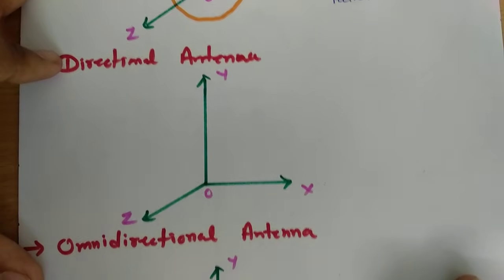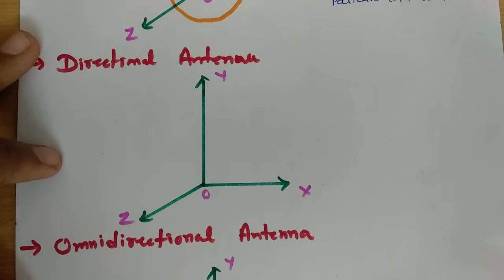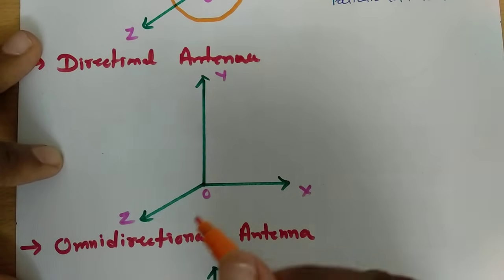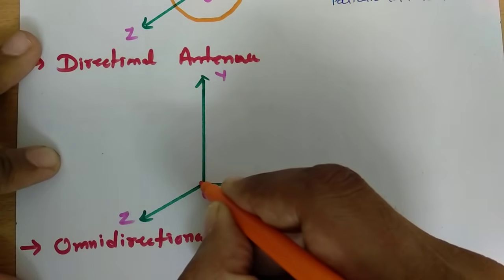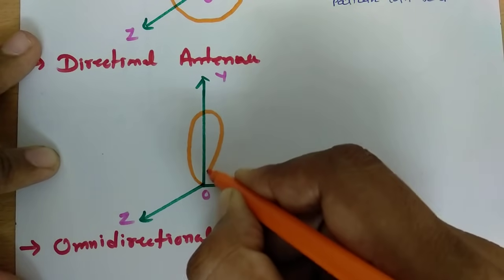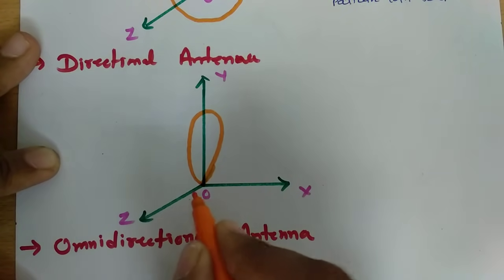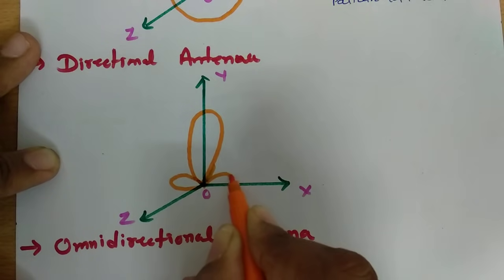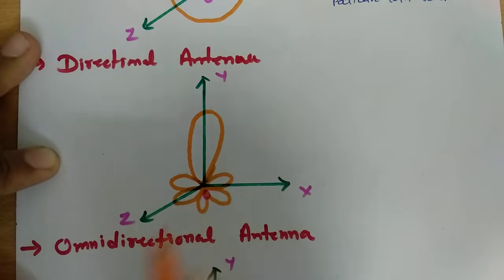Now let us look at the second type of antenna: directional antenna. A directional antenna radiates in a particular direction. If I say I have a directional antenna which has maximum directivity in the y-direction, then its maximum gain will be in the y-direction, so its major lobe will be there in the y-direction.